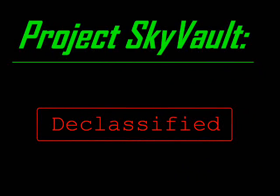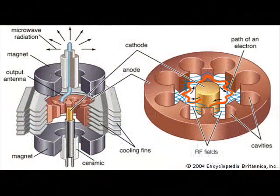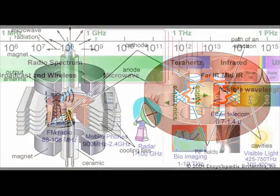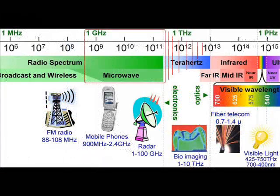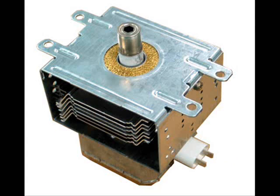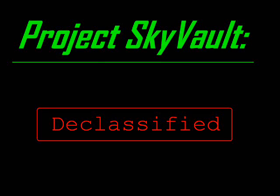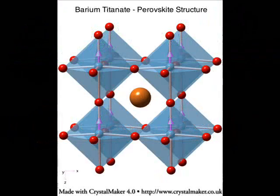The original Project SkyVault setup used cavity magnetron vacuum tubes to generate the microwave source beam, which operated on frequencies ranging from 7 to upwards of 1000 gigahertz. By comparison, the magnetron tubes used in a microwave oven are 2.54 gigahertz. The original setup used a metamaterial target made of barium titanate placed in line with the source beam.